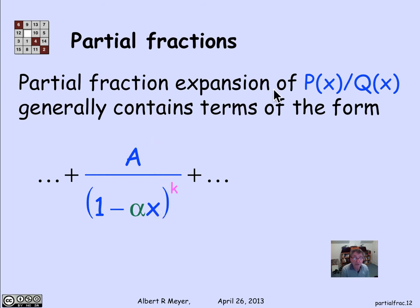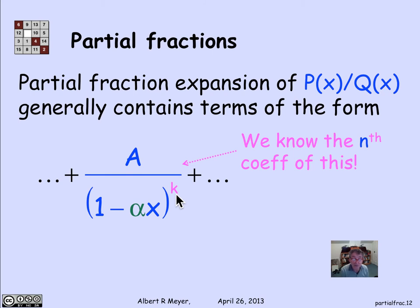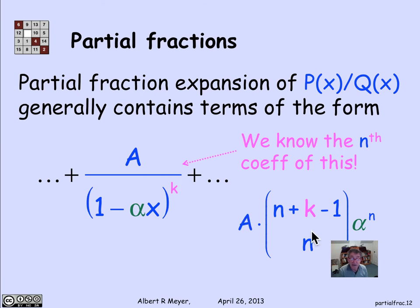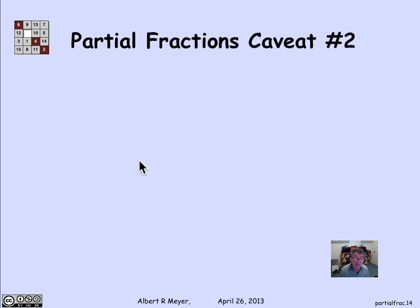Fortunately, even in the general partial fraction expansion, when you have terms of the form a constant a over (1 minus αx)^k, we definitely know the nth coefficient — it's simply a times C(n + k − 1, n) times α^n. So terms like this needn't scare us; we can handle them. We just have to solve for the numerator constants a.